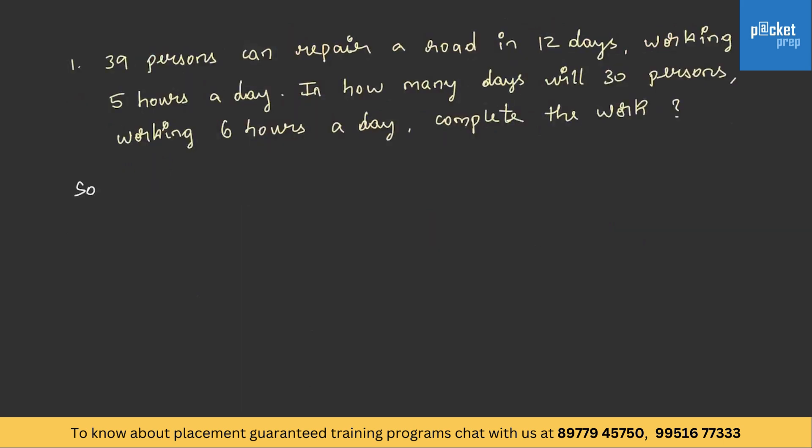Let us step into another question of this type. 39 persons can repair a road in 12 days working 5 hours a day. In how many days will 30 persons working 6 hours a day complete the work? So from statements 1 and 2, we will just separate the elements. In this question it is men, days, and time, and we have to write it in the second statement as well. So the number of persons are 39, number of days is 12, and time is 5 hours a day. Similarly in statement 2, we can find number of men 30 and working for 6 hours a day, that is T2, and we have to find out in how many days, that is X.